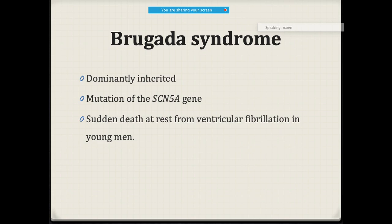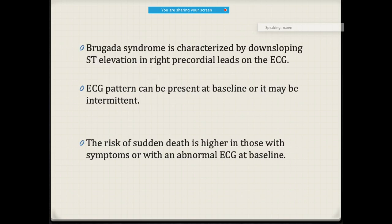Another important mechanism for sudden cardiac death is Brugada syndrome. Brugada syndrome is caused by a mutation of the SCN5A gene — the same gene responsible for long QT3. Most people who die are young men who die from ventricular fibrillation. On ECG, there is down-sloping ST elevation especially in the right Brugada leads V1–V3. The ECG pattern can be present at baseline or intermittently.